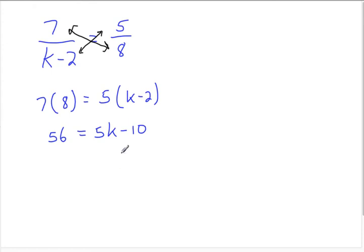So we're going to end up with 56 equals 5K minus 10. Now we're using properties of equality to isolate K. So we get 66 equals 5K, and then we divide by 5. I'm going to switch it around so K is on the left. So K equals 66 fifths, which is not reducible.